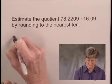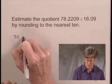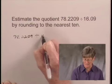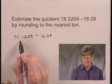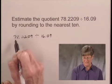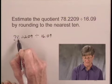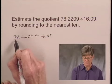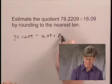So we have 78.2209 and we're dividing by 16.09. When I round 78.2209 to the nearest 10, I see that 7 is in the tens place. The next number to the right, 8, is 5 or higher. So that tells me to round 7 tens up to 8 tens. I'll round that number up to 80.